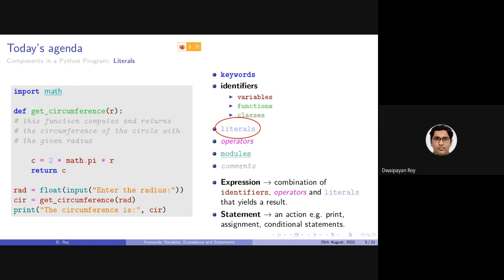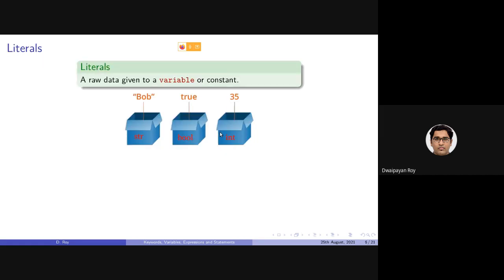Today's discussion will be on literals. As we have discussed, the different components of a Python program include identifiers, which we have already covered. Today we will be concentrating on literals. Literals are the raw data given to a variable or a constant. These values stored in containers (variables) are formally named as literals.